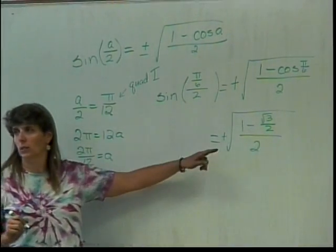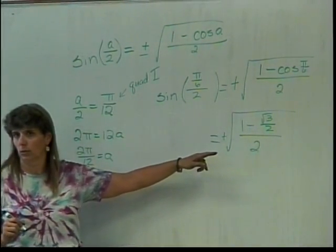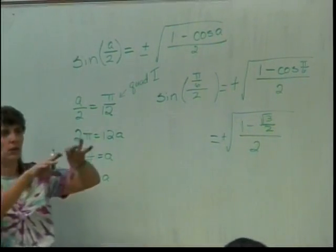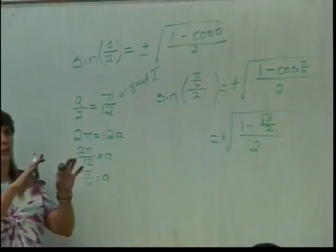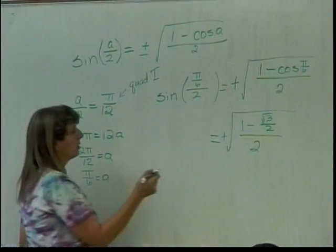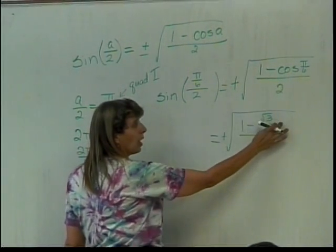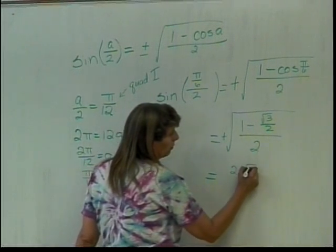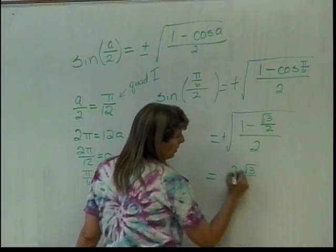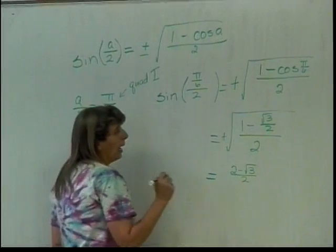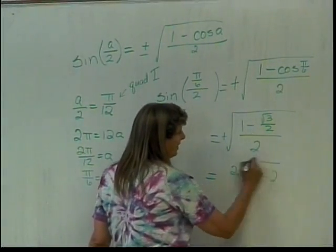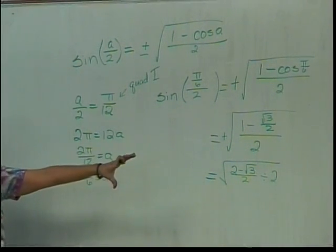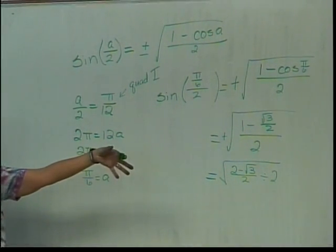If this were a test, you could stop here. Webwork expects you to do a little bit more. Let's see where we can go to simplify this. If I get a common denominator in my numerator, that would be 2. So I'd have 2 minus the square root of 3 over 2. And then that's divided by 2, so I'm going to write it this way.